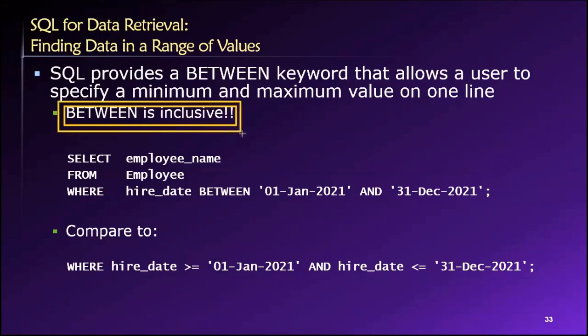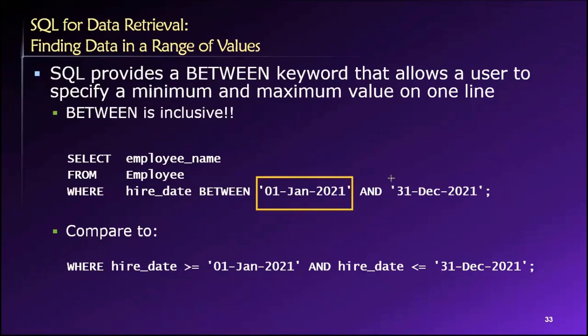So that means the values that we're providing here define the boundaries. And if an employee, for example, was hired on exactly January 1st, 2021, they would be included in the results. Similarly, if an employee was hired on December 31st, 2021, they would also be included in the results. So these are inclusive range boundaries that we're providing when we use the BETWEEN keyword.